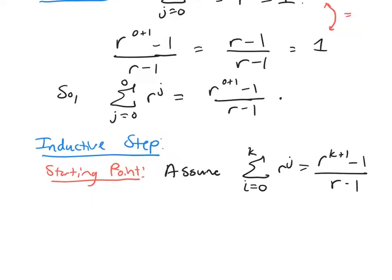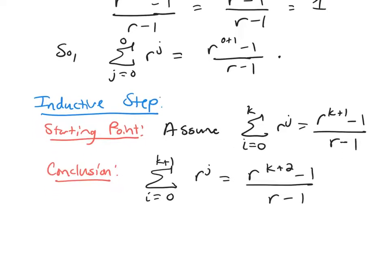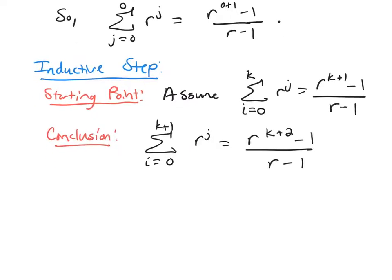And then what conclusion are we trying to get to? We're trying to show that the formula is true for the next value, k plus 1. So r to the k plus 2 minus 1 over r minus 1. All right, so we're ready to start our proof now for the inductive step.